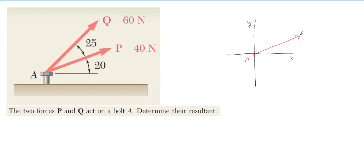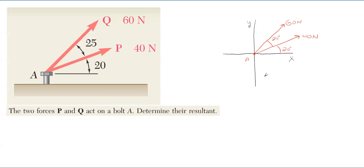We have force P, which is 40 newtons, and then we have force Q, which is 60 newtons. The 40 is 20 degrees off of the X, and the 60 is then 25 degrees off of the 40, so a total of 45 degrees off of the X for the 60.